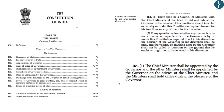Under the Constitution of India, it's important to know that Part 6 deals with the executive of the state. Under Part 6, the first chapter deals with definitions, and Chapter 2 is the executive. The first part of this chapter deals with the governor, which is from Article 153 to 162. Article 163 onwards deals with the arrangement of the council of ministers.